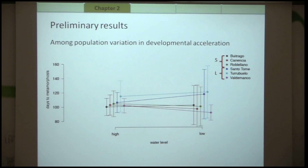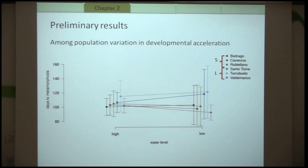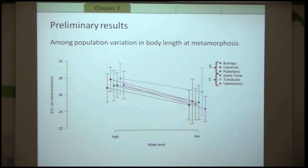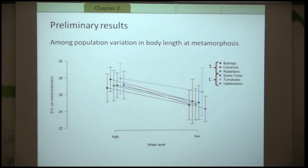I do have some preliminary results for the larval period. Some populations do not exactly behave as predicted, so I am currently repeating the experiment on four clutches to properly assess the larval period when development is accelerated. For body mass and body length, it seems that both are significantly decreased when animals undergo the water drop experiment and are forced to accelerate development.